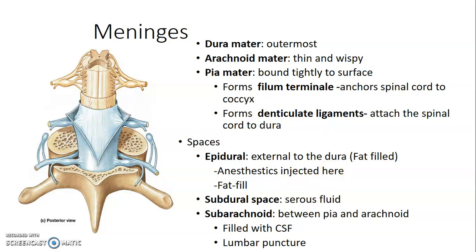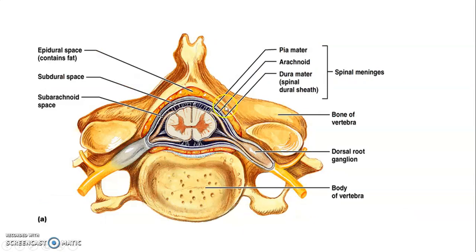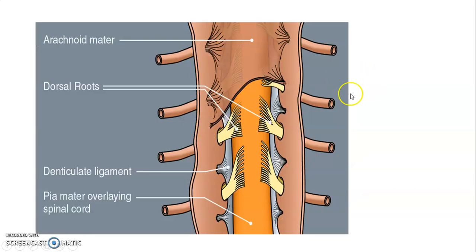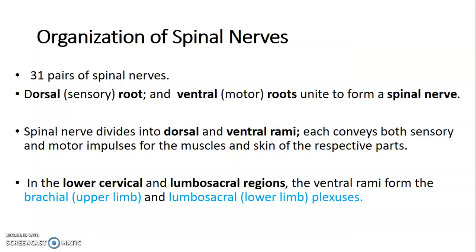The pia mater forms the filum terminale anchoring the spinal cord to the coccyx, and also forms the denticulate ligament attaching the spinal cord to the dura laterally. Regarding meningeal spaces: the epidural space is outside the dura — where anesthetics are injected. The subdural space is between dura and arachnoid mater. The subarachnoid space between pia and arachnoid is filled with CSF and is where lumbar puncture is performed. In the next lecture we will continue with the organization of the spinal nerves.